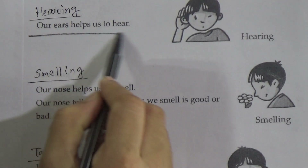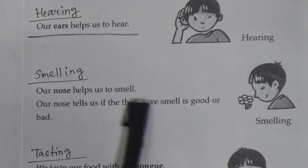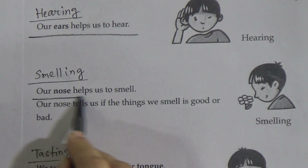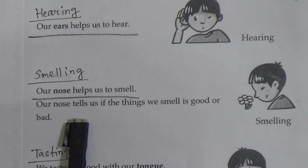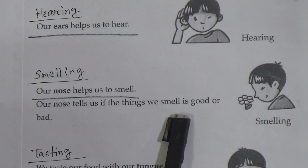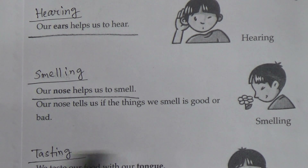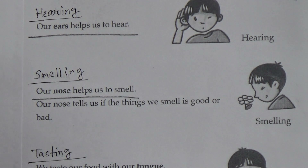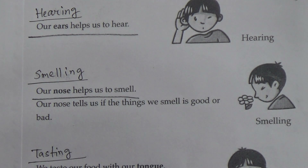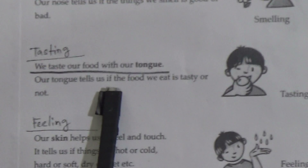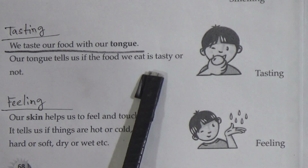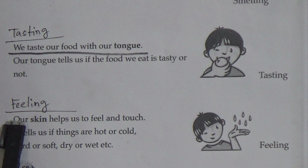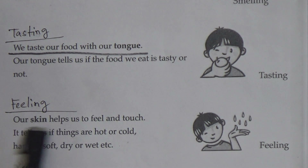Smelling — our nose helps us to smell. Our nose tells us if the things we smell are good or bad. Now tasting — we taste our food with our tongue — underline this line. Our tongue tells us if the food we eat is tasty or not.